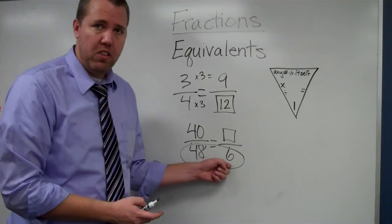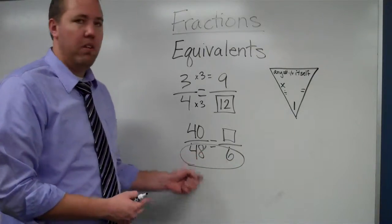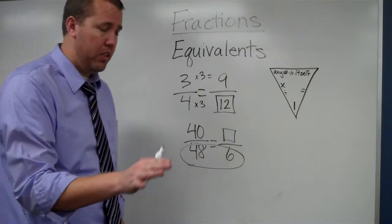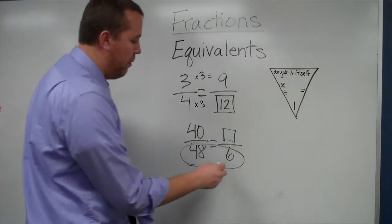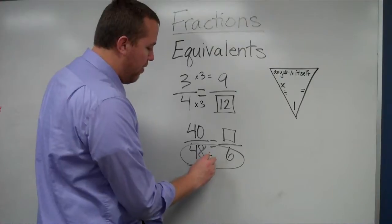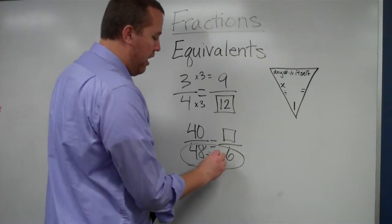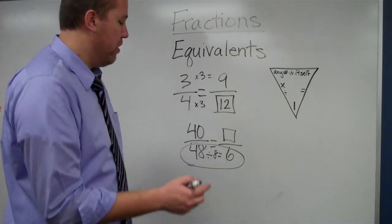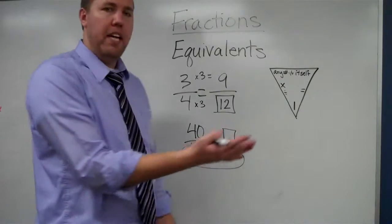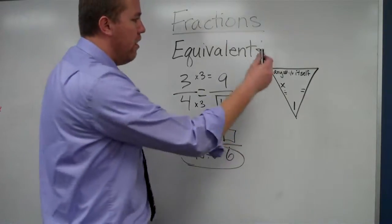I can do it 48 divided by 6, or I can do it 6 times whatever. I've just got to keep constant with whichever one I choose for that problem. So, let's do 48 divided by 8 equals 6. So, 48 divided by 8 equals 6. Perfect.